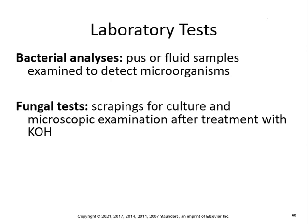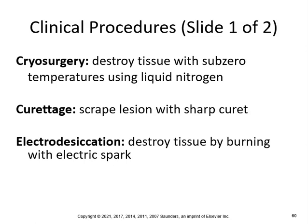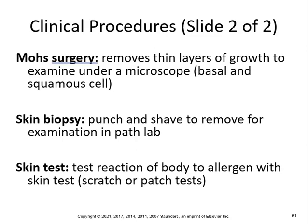Bacterial analyses are lab tests of pustule fluid samples to examine and detect microorganisms. Fungal tests involve scrapings for culture and microscopic examination after treatment with KOH. Cryosurgery destroys tissue with subzero temperatures using liquid nitrogen — it works well for skin tags. Curettage involves scraping a lesion with a sharp curette. Electrodesiccation destroys tissue by burning with an electric spark. Mohs surgery — definitely know what that is — removes thin layers of growth to examine under a microscope, such as for basal and squamous cell carcinoma. Skin biopsy uses punch and shave techniques to remove tissue for examination in the pathology lab. A skin test assesses the body's reaction to an allergen, like a scratch or patch test done by an allergist.